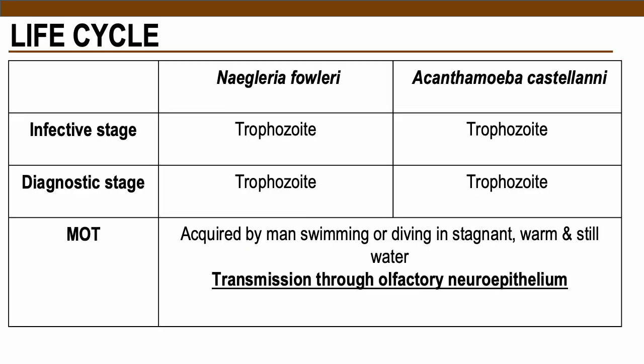In the life cycle of opportunistic amoebas such as Naegleria and Acanthamoeba, these two are free-living and do not require hosts to develop their species — they are naturally occurring in soil and water. The infective and diagnostic stage is the trophozoite. The mode of transmission is through swimming or diving in stagnant, warm, still water, transmitted through the olfactory neuroepithelium by nasal aspiration of water.